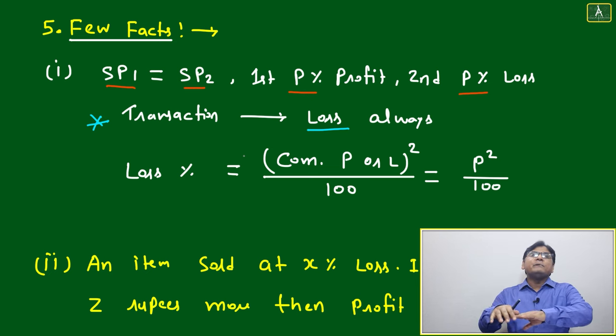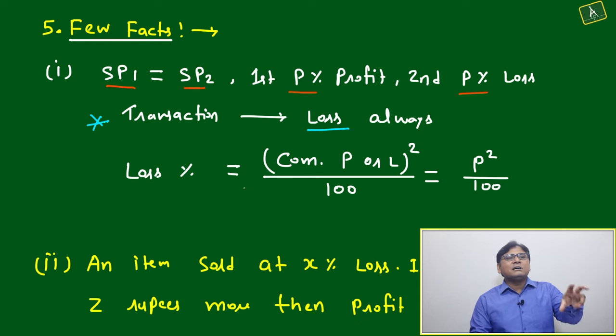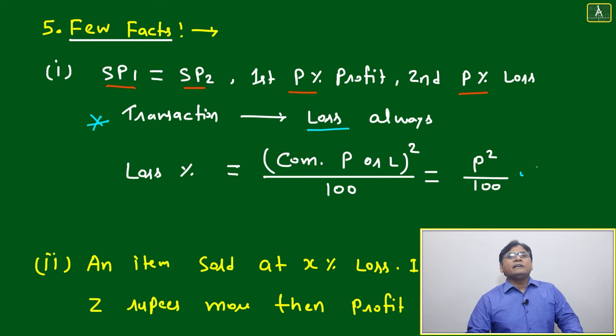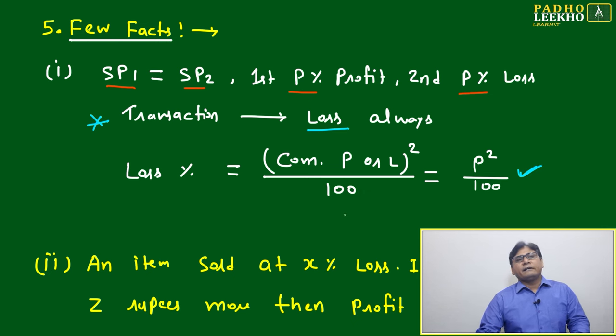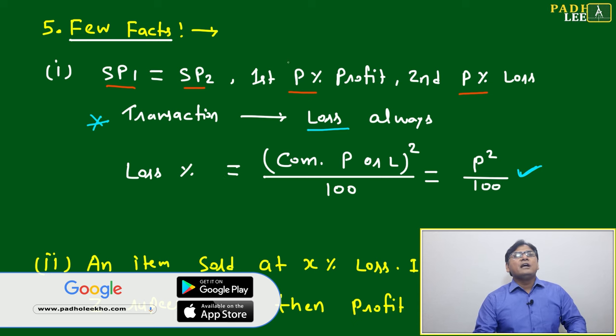Then percentage of loss in combined both of the transactions, it will become combined p or loss, whatever is there, p squared divided by 100. Here you can say p squared by 100 that will be your loss. Whatever overall loss you will get due to this transaction, you will get p squared by 100.